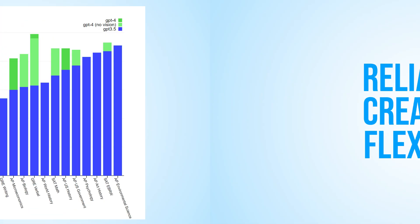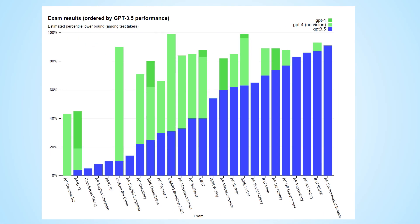OpenAI provided exam result stats in one of their articles, which show that GPT-4 outperforms GPT-3.5 by a huge margin in most real-world tests. In the graph provided, the columns represent various real-world tests, with blue indicating the scores received by GPT-3.5 and green indicating those of GPT-4.